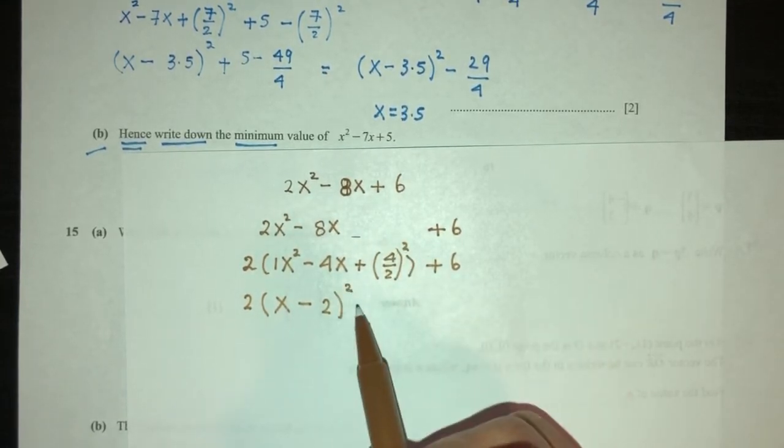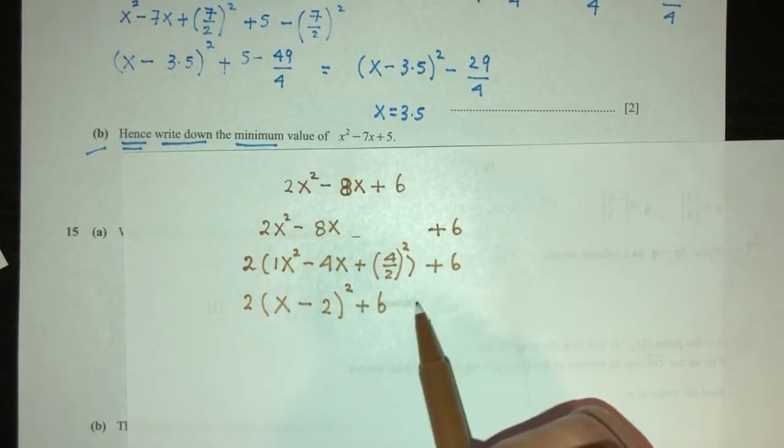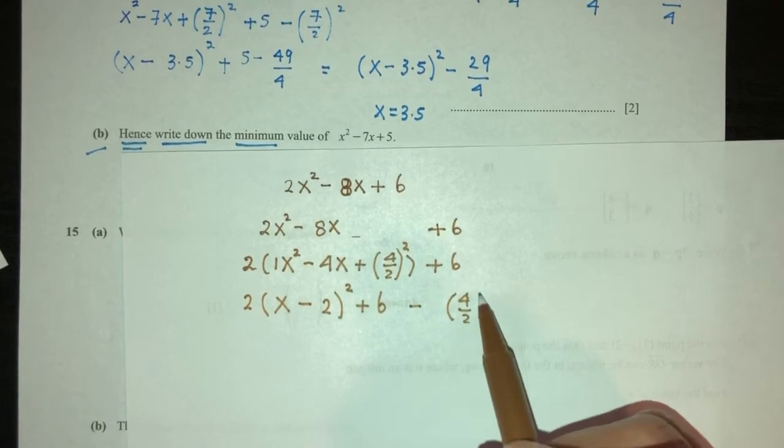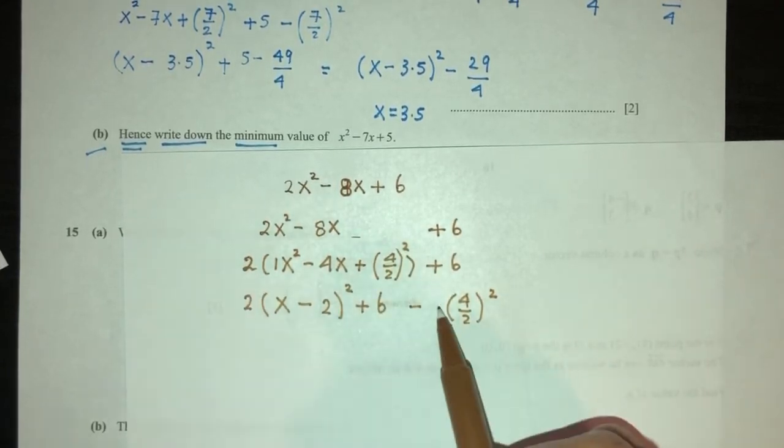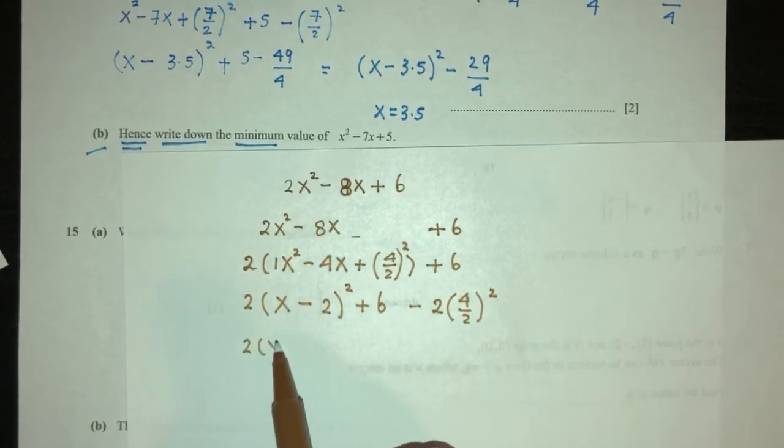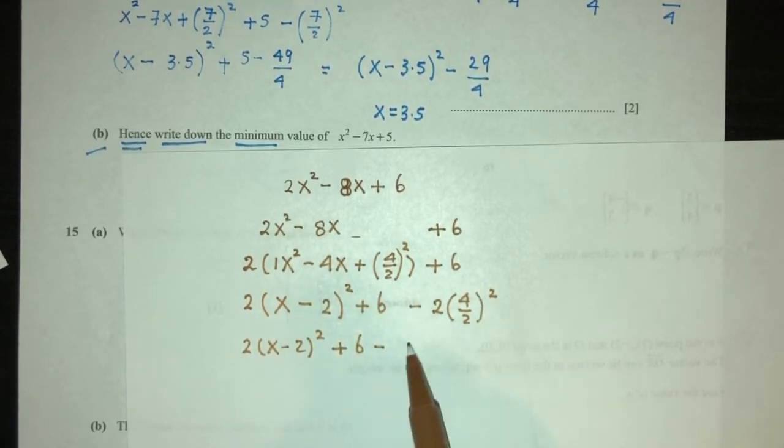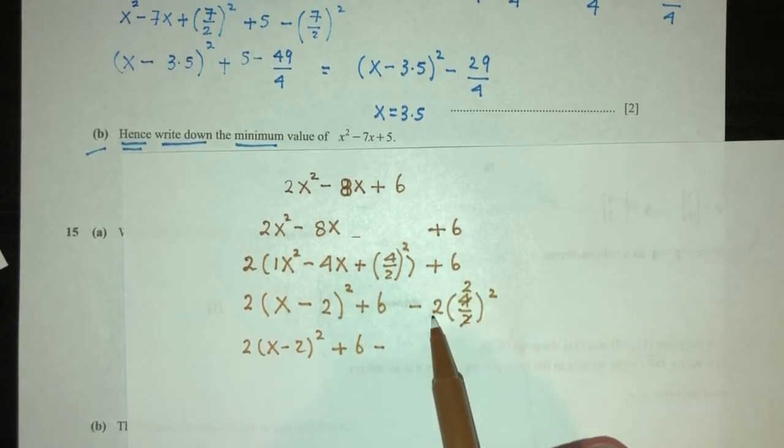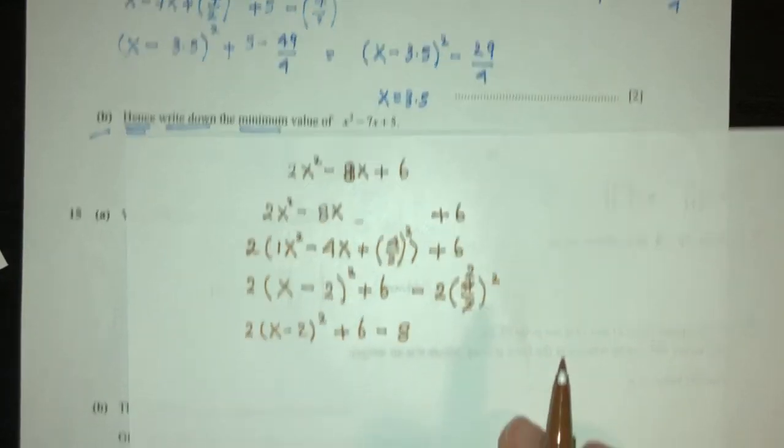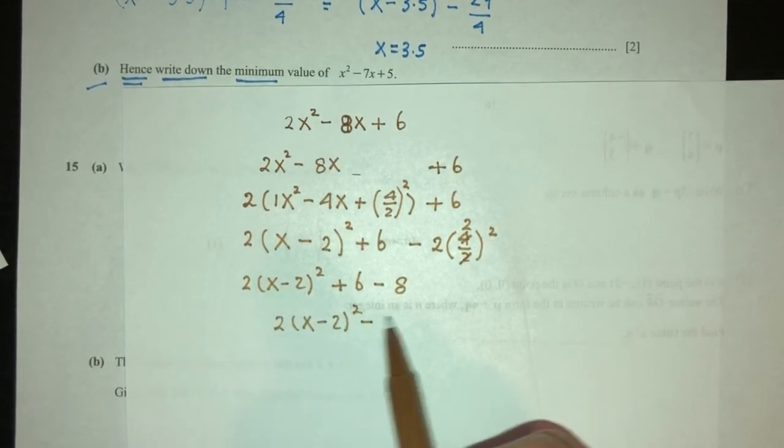Now if you plus the number, we have to minus by the same number. Minus 4 over 2 squared. But since this number was inside the bracket, we have also to take out the 2. So you have 2 times x minus 2 squared plus 6 minus, this is 2, that will be 8. 4 times 2 will be 8. So finally you will have something which looks like this, minus 2.